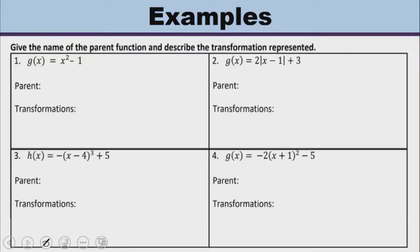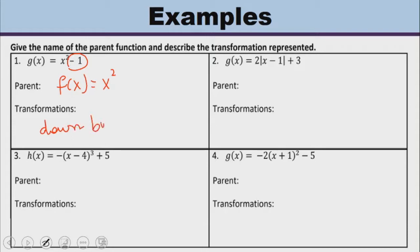Now for some examples. For g of x, we are asked to provide the parent function for each question and describe the transformation. The parent function for question one is quadratic. There is only one transformation — a constant is being subtracted from the parent function, so this is going to move the graph down by one.